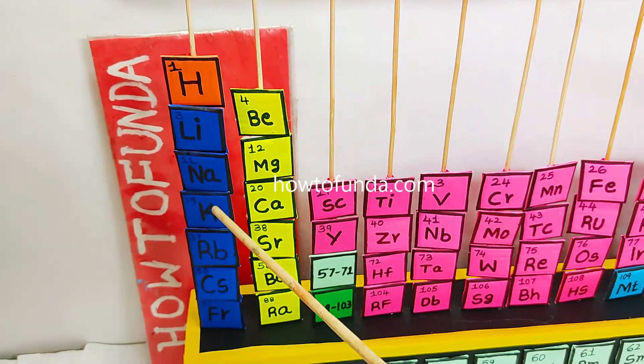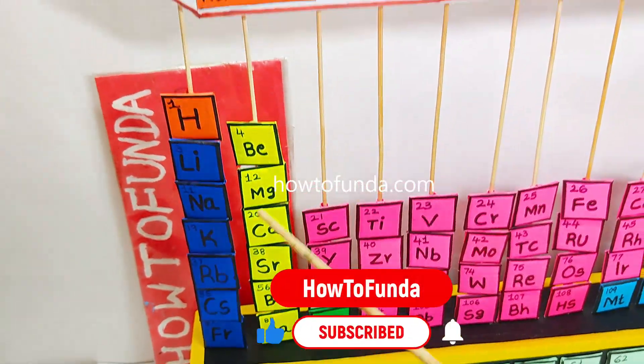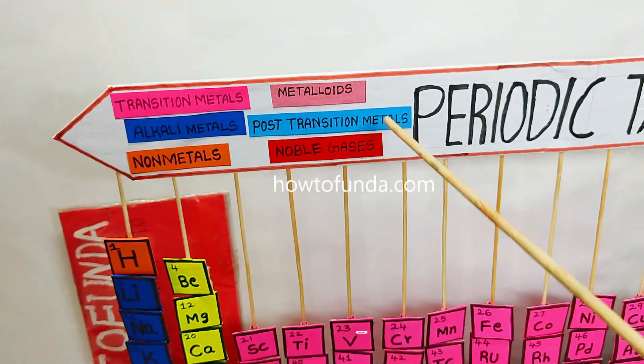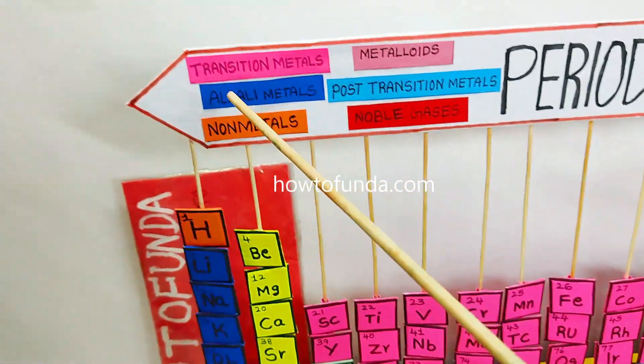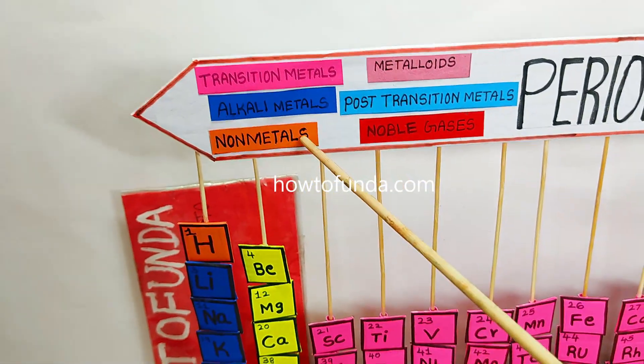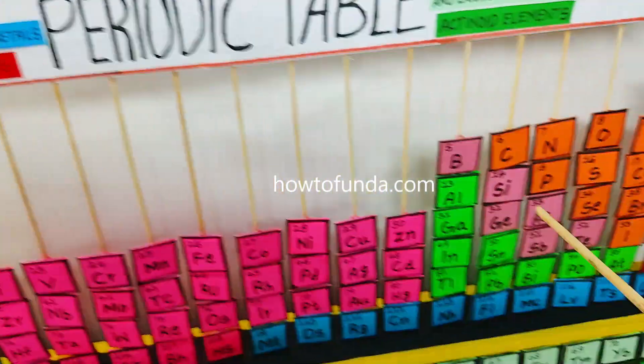We have post-transition metals which are given in light blue color, and we have all the non-metals here. These are all non-metals.